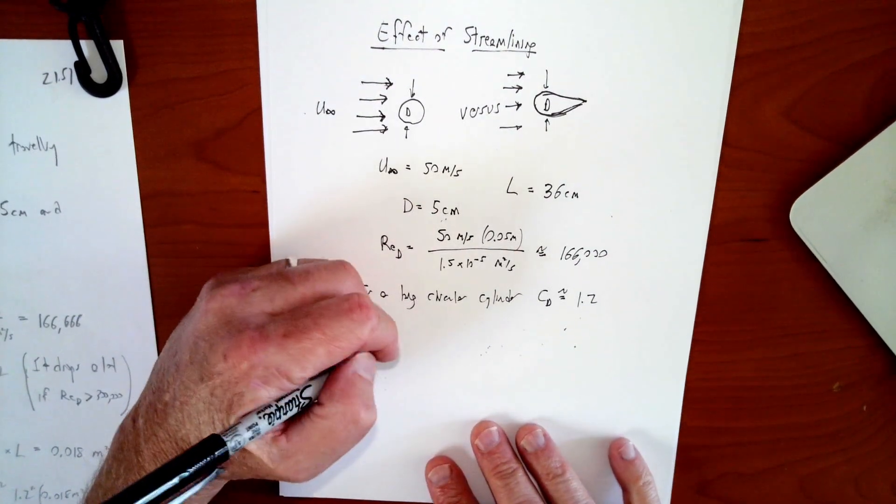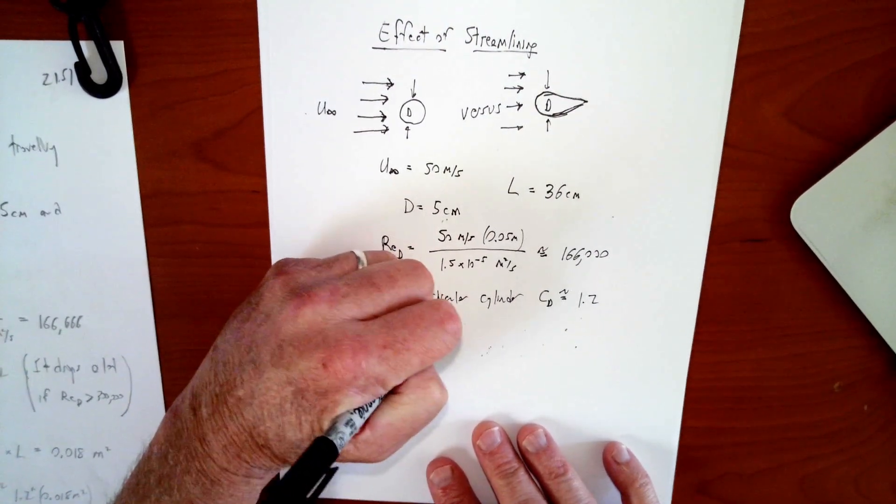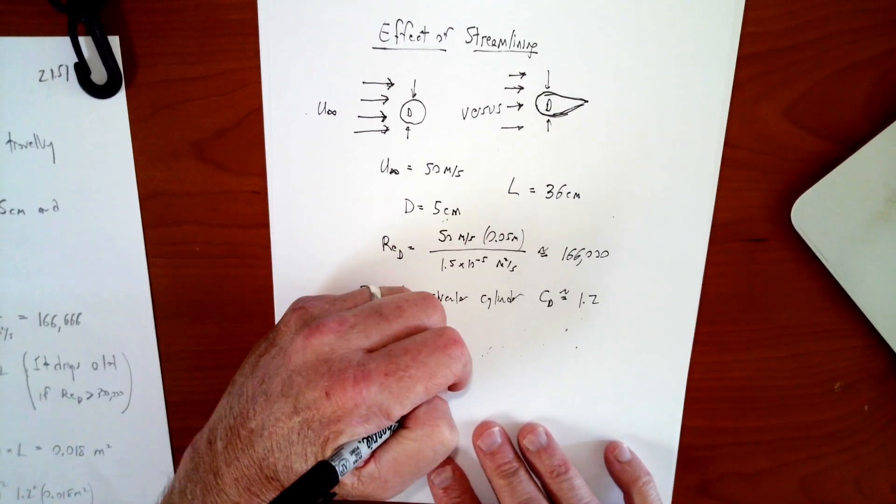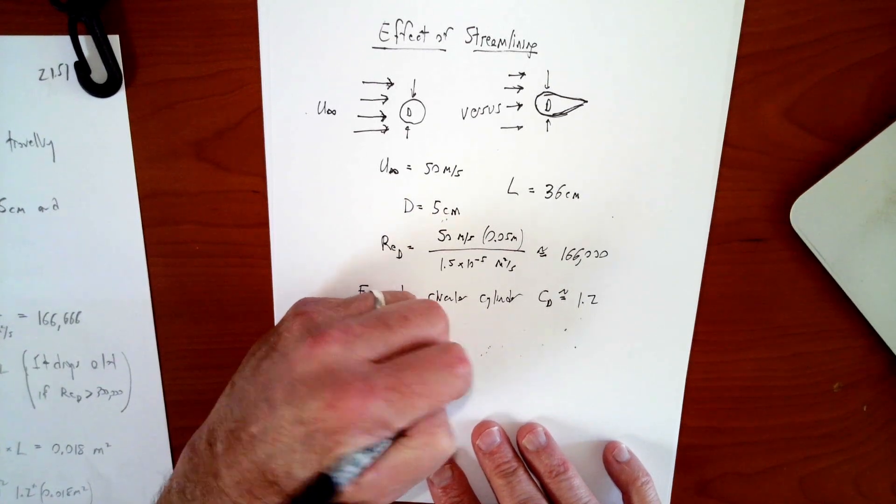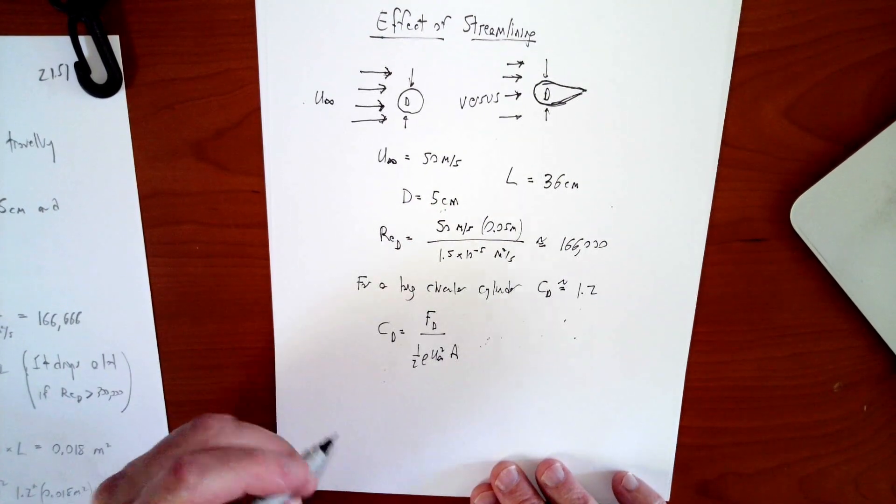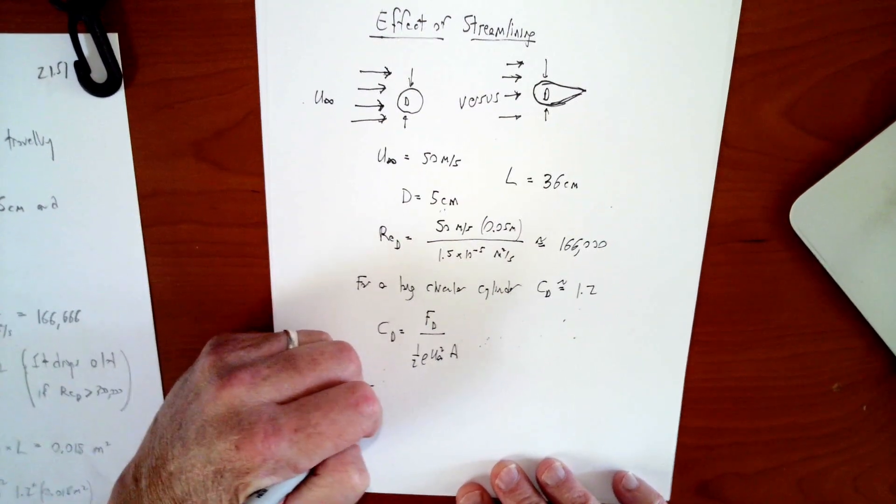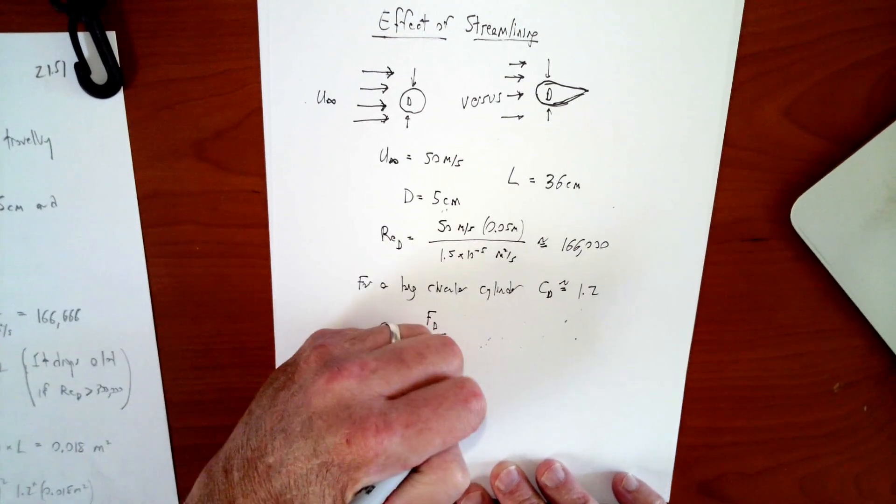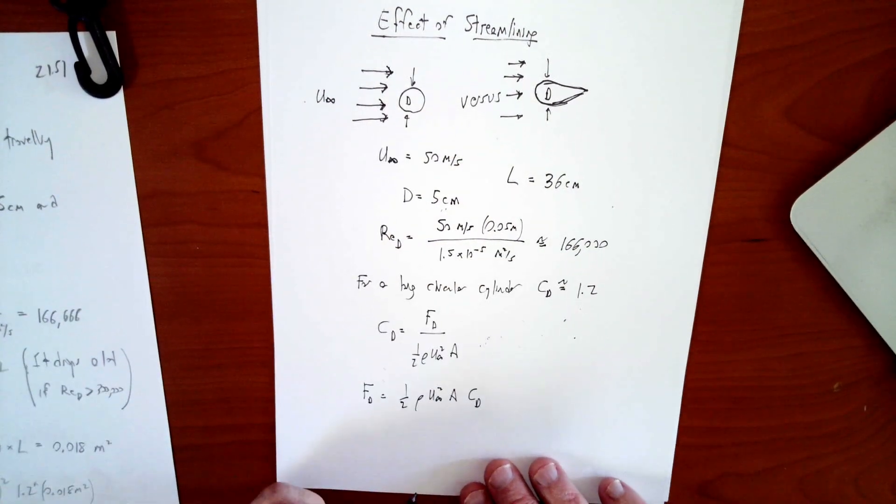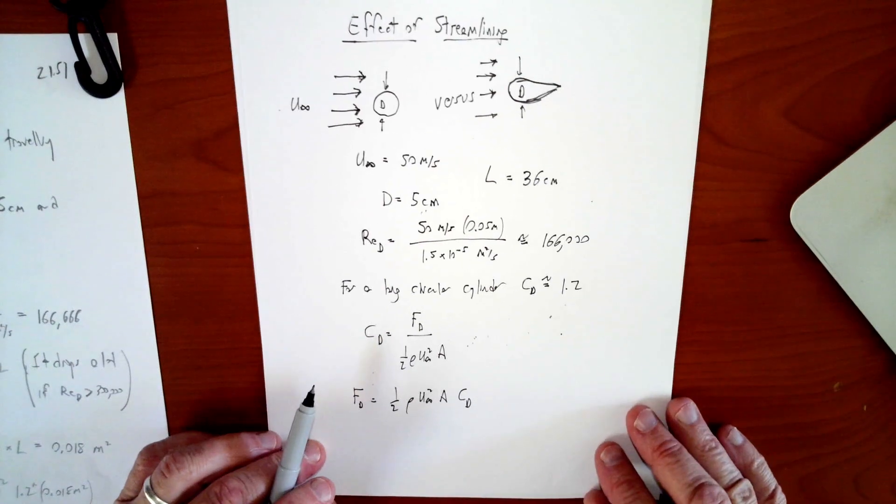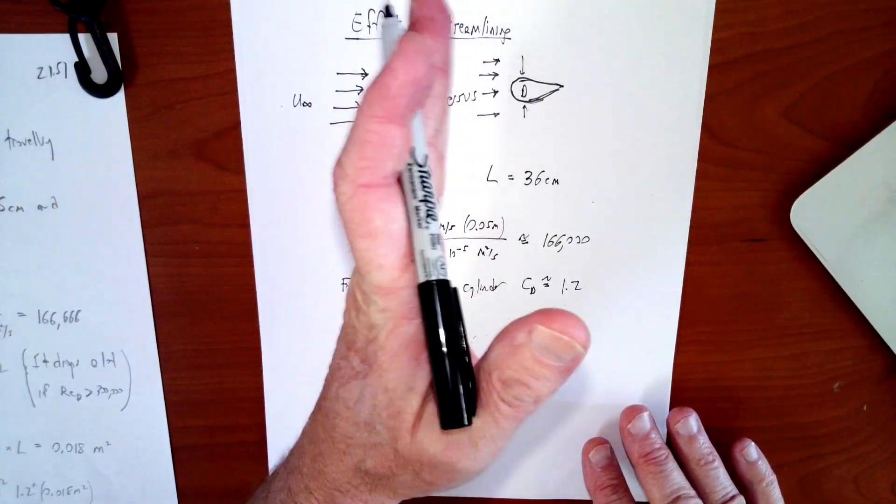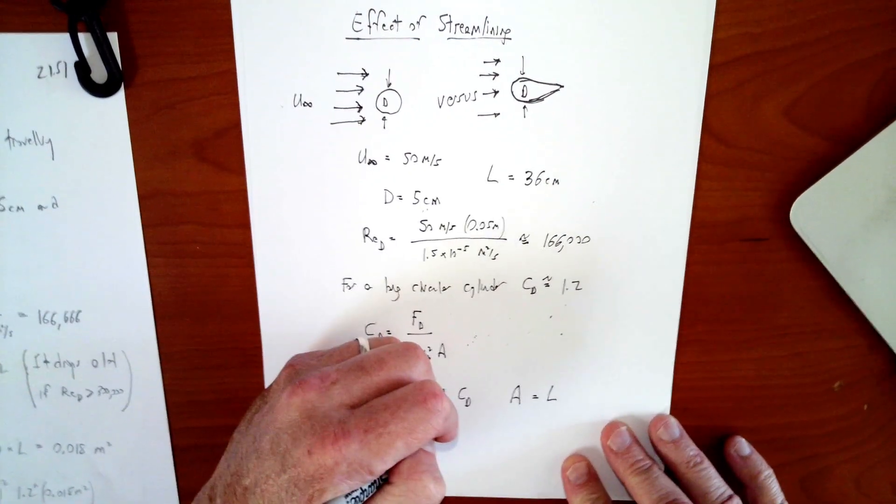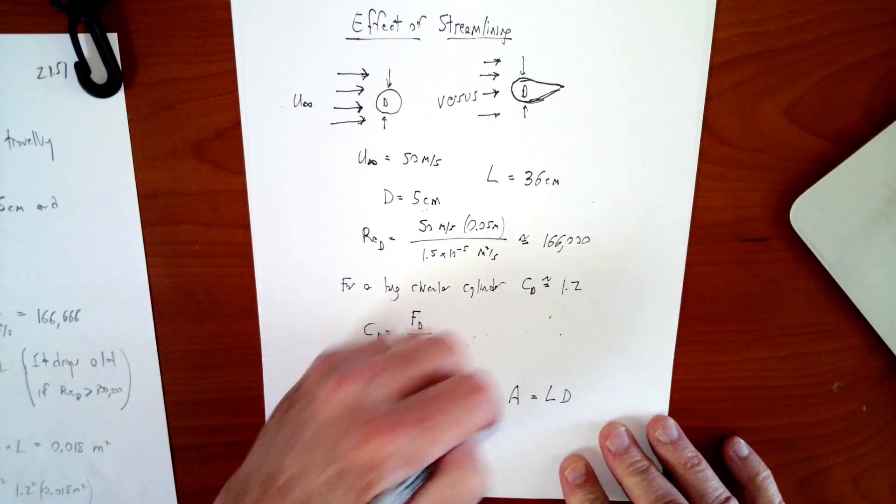We know the definition of the drag coefficient, C sub D is equal to the force of drag, 1 half rho u infinity squared times A, like that, right? So we can calculate the drag force. So the drag force, very simply, 1 half rho u infinity squared A times CD. We need the area, that area is the frontal area, so that's the area from looking at the cylinder from the upstream position. So the frontal area is equal to the length of the cylinder times its diameter. So that's the frontal area.